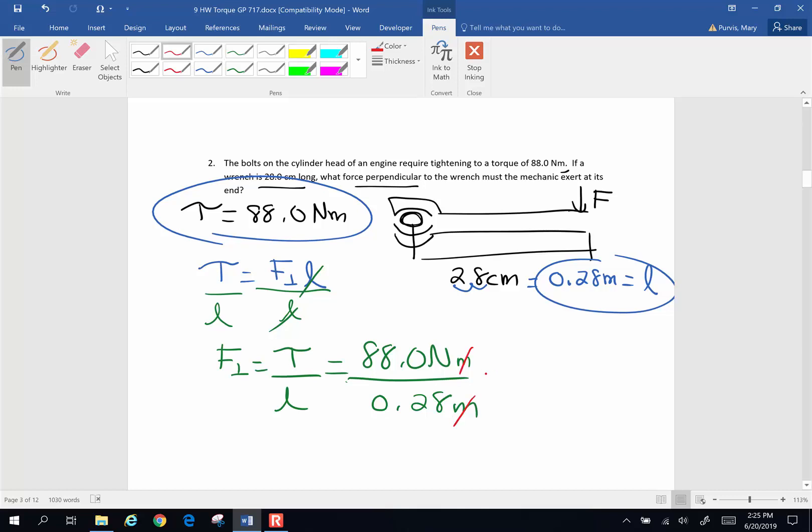I will end up with the units newtons on top. Let's go ahead and do that math. 88 divided by 0.28 and we're going to end up with 314 newtons is going to be what the perpendicularly applied force is supposed to be.